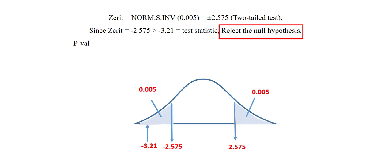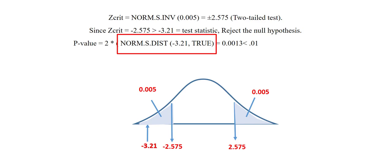We can also find the P value by typing this formula right here into any cell in Excel. Once we get the area on one tail we multiply it by 2 because it is a two tail test. So the P value comes out to be 0.0013 which is also less than alpha which is 0.01. So we equally reject the null hypothesis.